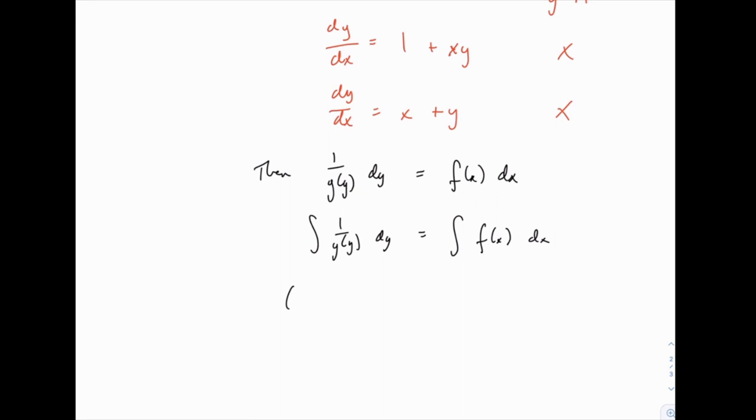And then at the end, I'll say if possible, solve for y. There are examples you'll find where that last step of solving for y just isn't doable algebraically, and then we can leave the answer with a function of y on the left side and a function of x on the right side. And that's okay. But if possible, try to solve for y as much as you can.